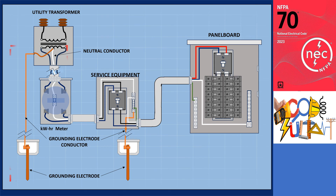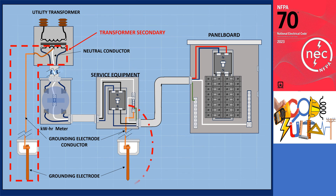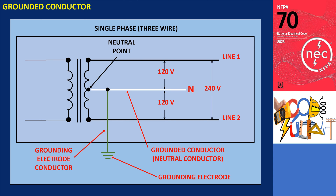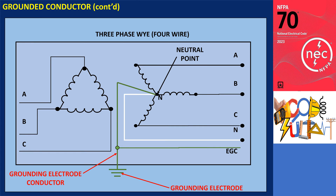This arrangement can be observed in various scenarios, such as at a transformer secondary, a premises service, or another power source. In typical residential and light commercial settings, a single-phase 3-wire system is commonly used. This system consists of two hot wires and a neutral wire. Since the neutral is grounded, the grounded conductor in this case is the conductor located at the neutral point.